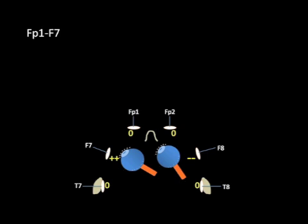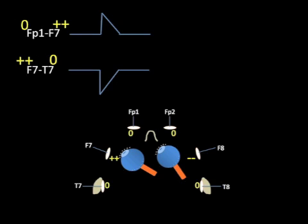Now let's think about this from the perspective of the EEG recording. Again, first we'll look at FP1-F7 channel. F7 is experiencing a net positive charge, and FP1 is effectively isoelectric. Because FP1 is relatively negative with respect to F7, or F7 is relatively positive with respect to FP1, according to our polarity rules, there will be an upward deflection in this channel. If we look at the next channel in the chain, again, F7 is positive, and T7 is effectively isoelectric. According to our polarity rules, this means that we will have a downward deflection in this channel, and the recording might look something like this.